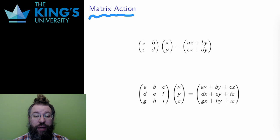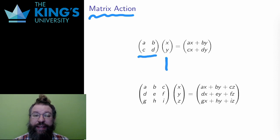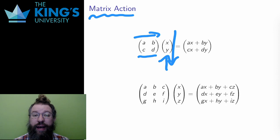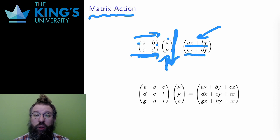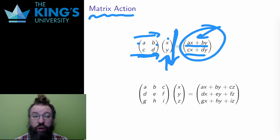For any matrix and any vector of the right length, the matrix acts on the vector. Let me demonstrate this in R2. A 2×2 matrix acts on a vector in R2 by going across the rows of the matrix and down the vector. I take the coefficients, pair them up, and multiply them together: a times x and b times y, then add them up. So the first entry is ax plus by, across the first row and down the vector. The second entry uses the second row: cx plus dy.